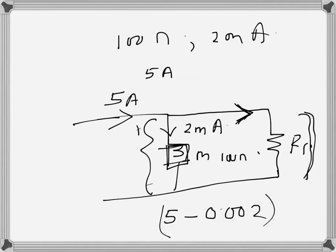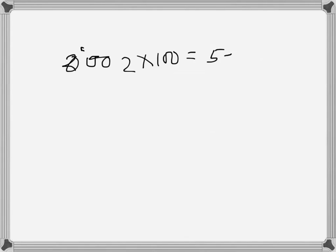So the voltage drop across the meter is 2 milliampere, so that's 0.002 times 100, and the current through this path is 5 minus 0.002. So that resistance that is needed is what we need to find.